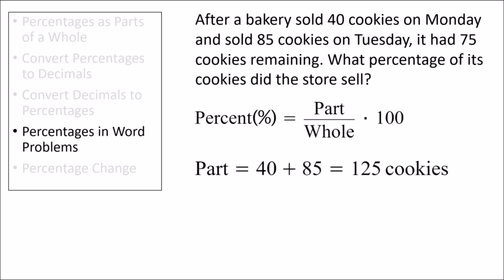Let's try to figure out the value for the part and the value for the whole in our percent equation. For the value of part in the percent formula, we're interested in the cookies sold by the store, which we can find by adding together the 40 cookies sold on Monday and the 85 cookies sold on Tuesday, giving us 125 cookies for the value of part.